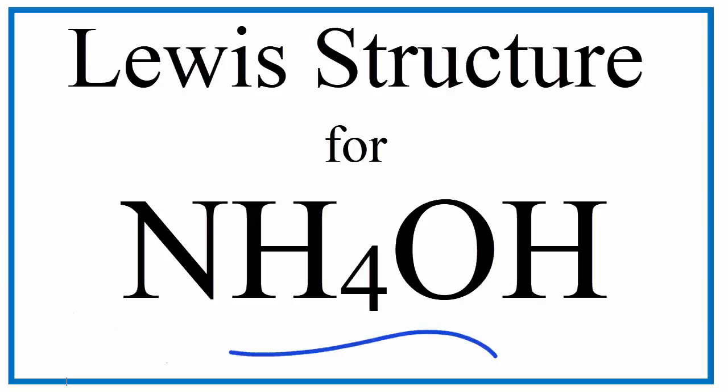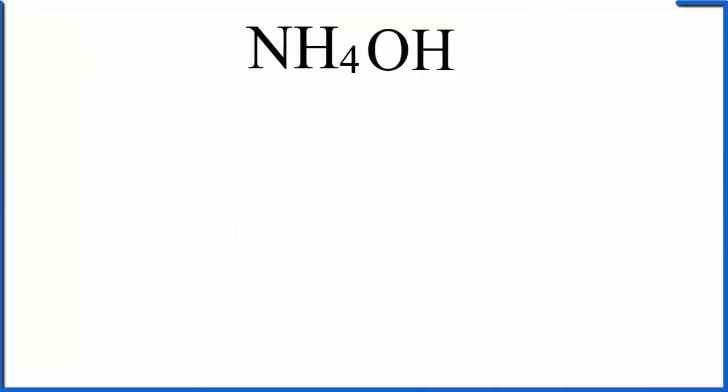To write the Lewis structure for NH4OH, we actually have to write two different Lewis structures. That's because NH4OH, ammonium hydroxide, is made up of two ions.